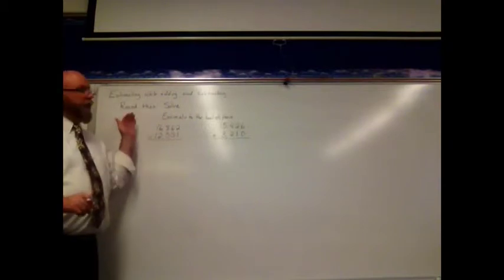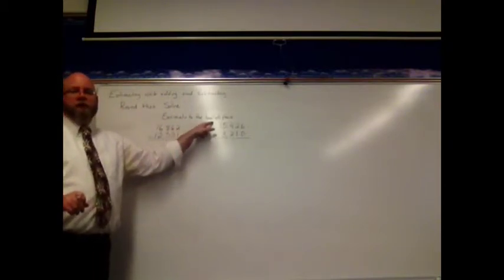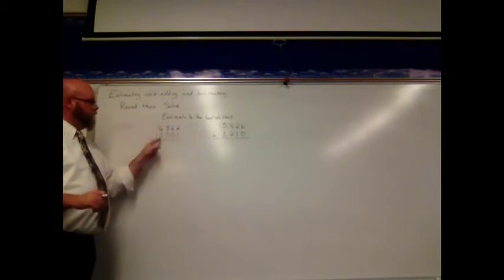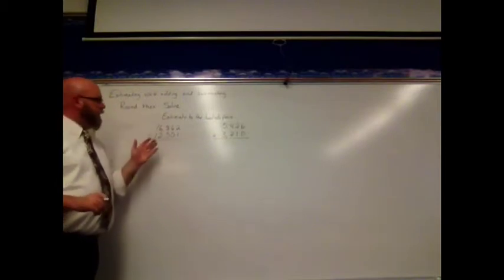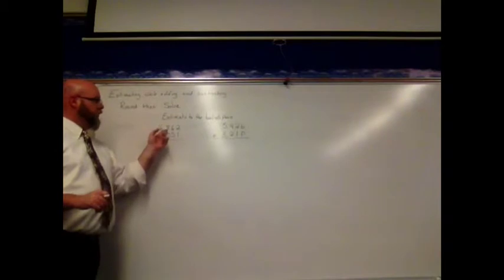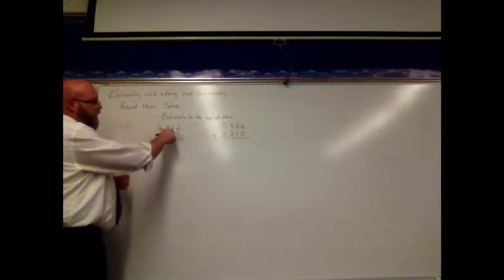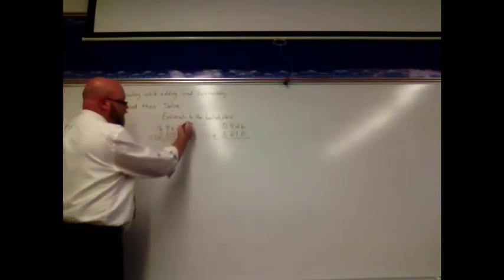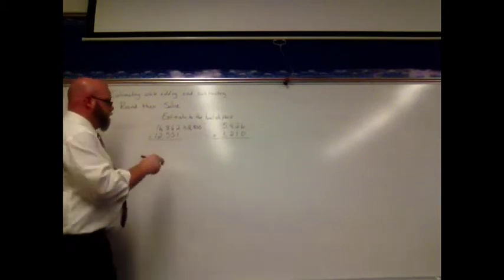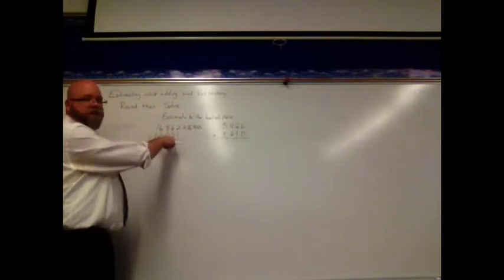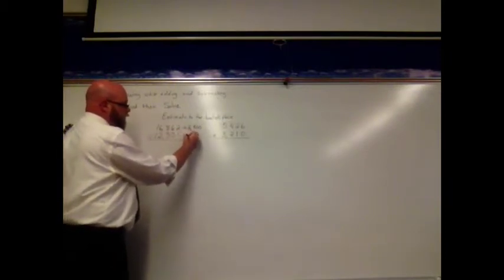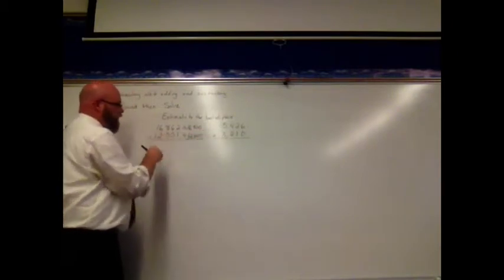Now I want to do a similar problem, estimating again, but this time we're going to estimate to the hundreds place instead of the tens place. I see I have 16,862 minus 12,551. I'm estimating to the hundreds place, so I look at the digit in the tens place to ask: am I closer to 16,800 or 16,900? The 6 here tells me that I am closer to 16,900. For 12,551, I look at the 5 in the tens place — 5 to the sky — so that tells me it's closer to 12,600.